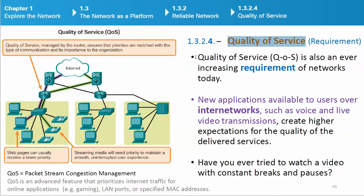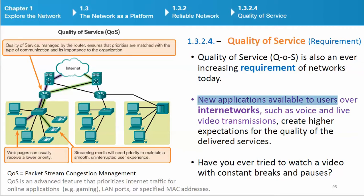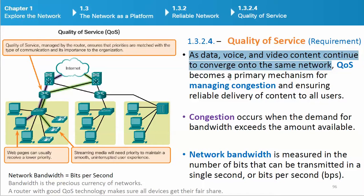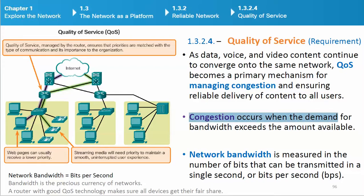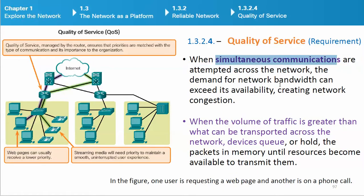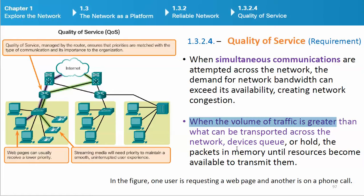Quality of service (QoS) is an ever-increasing requirement of networks today. New applications available to users over Internet networks, such as voice and live video transmissions, create higher expectations for the quality of delivered services. As data, voice, and video content continue to converge onto the same network, QoS becomes a primary mechanism for managing congestion and ensuring reliable delivery of content to all users. Congestion occurs when the demand for bandwidth exceeds the amount available. Network bandwidth is measured in bits per second (bps). When simultaneous communications are attempted across the network, the demand for bandwidth can exceed its availability, creating congestion, and devices queue the packets in memory until resources become available to transmit them.